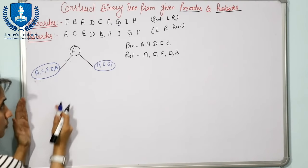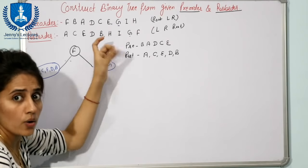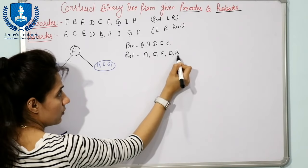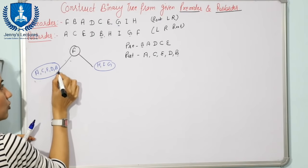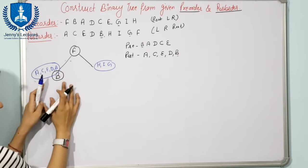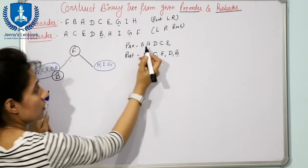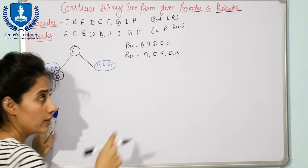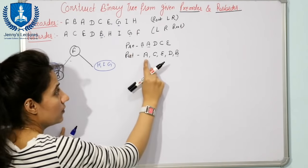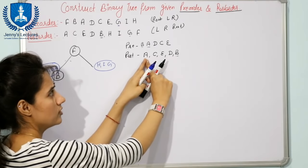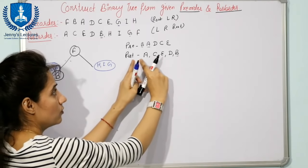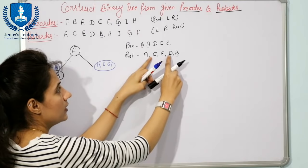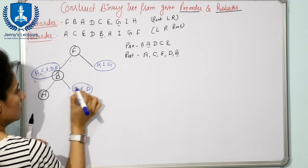Now construct the left subtree first. Apply the same steps recursively. Find the root: first element in pre-order is B, last in post-order is B - so B is root of left subtree. Find successor of B in pre-order: that is A. Find A in post-order - it is at the start. All elements from start to A form the left subtree, which is just A. The remaining elements C, E, D are part of the right subtree.